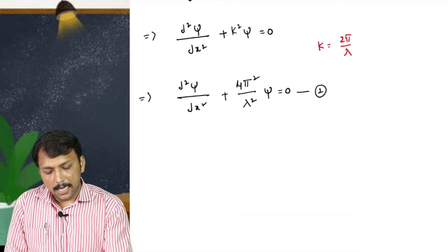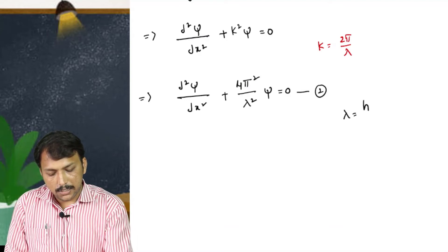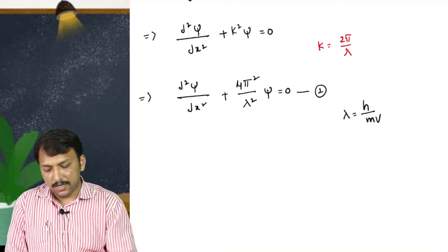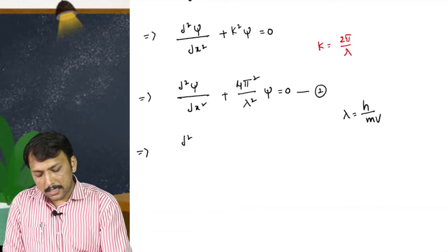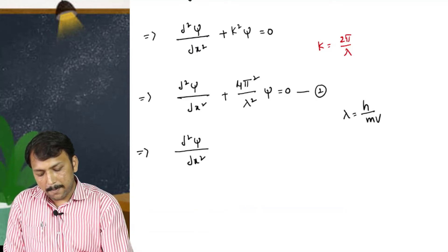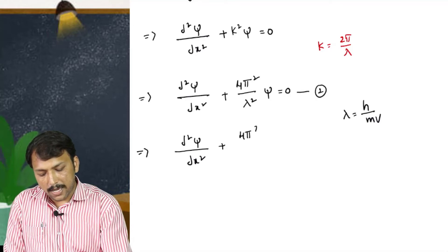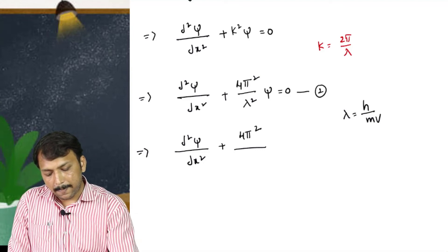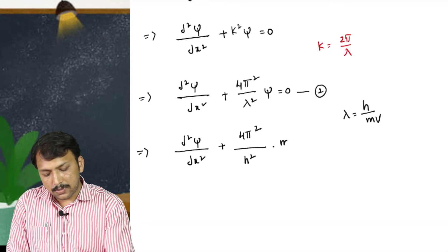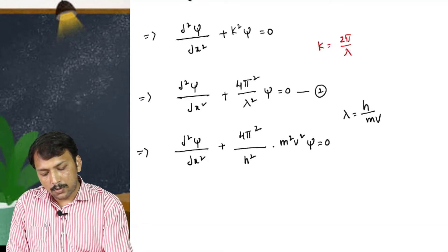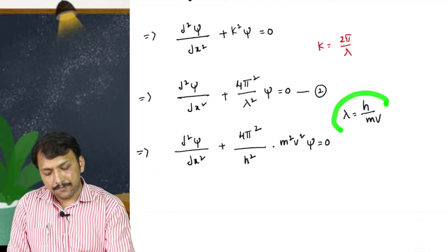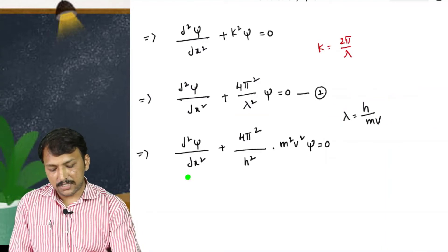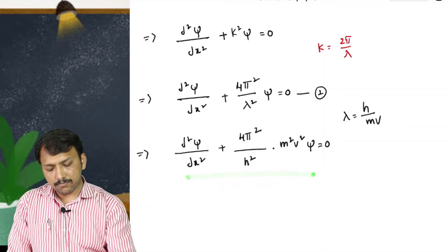According to de Broglie's theory, lambda equals h divided by mv. Substituting this into equation 2, we get d²psi/dx² plus (4·pi²/h²)·m²v²·psi equals 0.